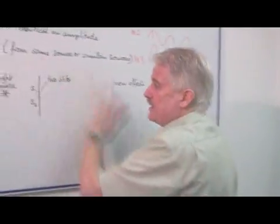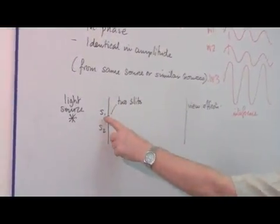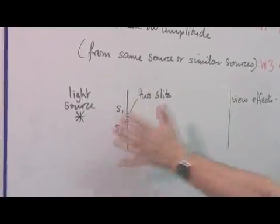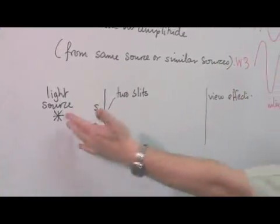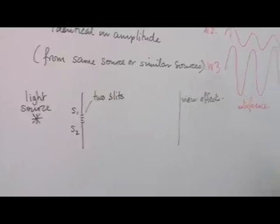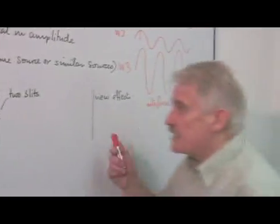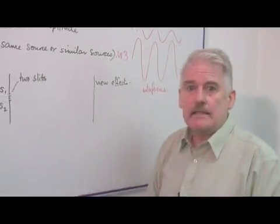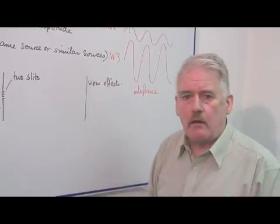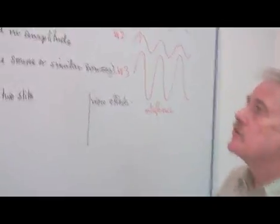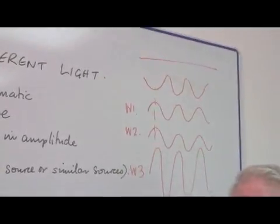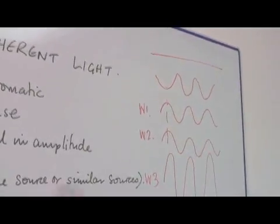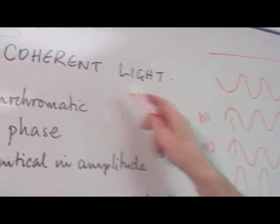So if I did this experiment, here's my light source. I've got two sources here. I would expect to see, if this was yellow, I'd expect to see a yellow screen. I would not expect to see what I actually see, which is a series of stripes on here, caused by interference. And the reason is that we are creating here coherent light, coherent sources.